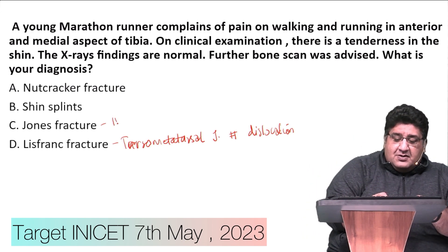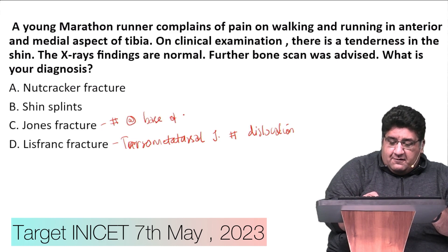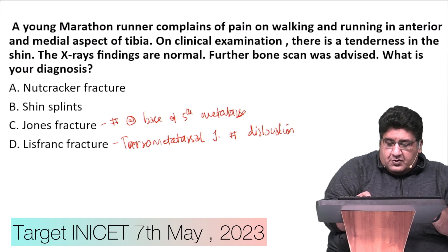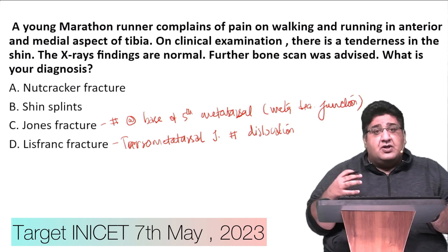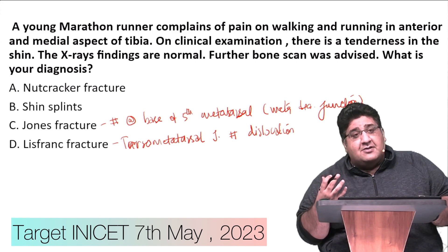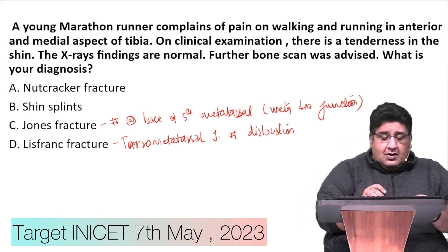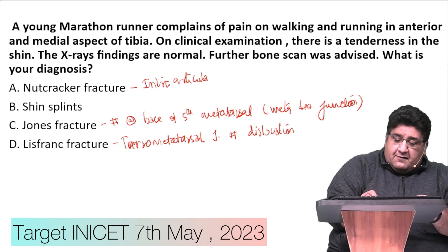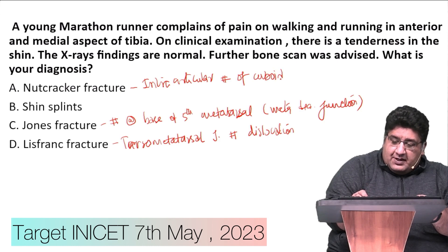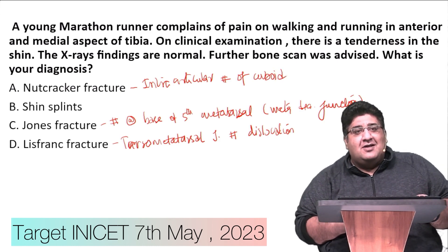Jones fracture is basically a fracture at the base of the fifth metatarsal - more precisely at the metaphyseodiaphyseal junction. Again, we do not expect the x-ray to be normal. Nutcracker fracture is an intraarticular fracture of the cuboid, and again we do not expect the x-ray to be normal.